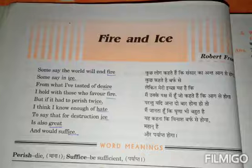Now let's talk about the literary devices of the poem. The literary device used is anaphora. Anaphora means the repetition of the same words at the beginning. We can also see alliteration used in this poem.